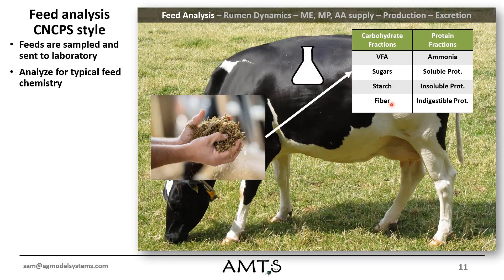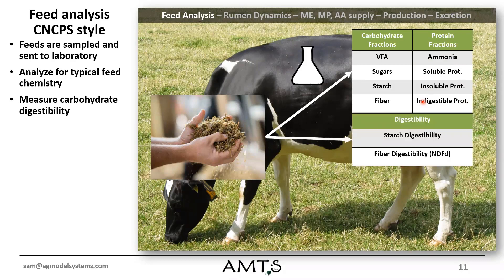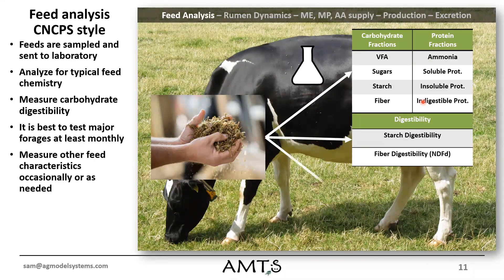So VFA, sugar, starch, fiber typically — ANDF, NDF-OM, or any sort of fiber type measurement. And then we also get it analyzed for different protein fractions. Most of the labs that are doing CNCPS type analysis are really looking to split those out into these general pools. So overall crude protein would encompass all of these nitrogen fractions. And then we can split that out into ammonia, soluble protein that is actually non-ammonia soluble protein at their soluble end, and then insoluble protein and indigestible protein. We also measure the digestibility of most of our carbohydrates at this point — so starch and fiber or NDFD. And it's best to test these things quite routinely.